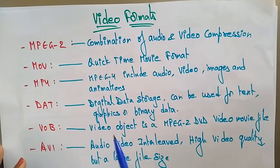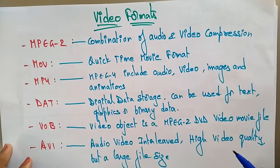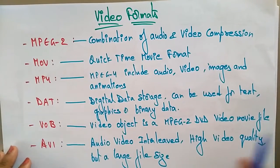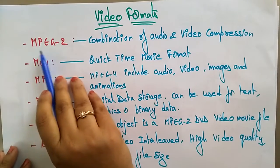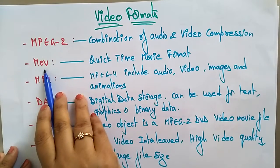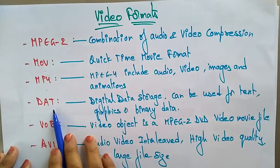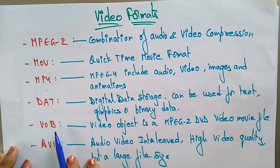Let's see the video formats. What are the different formats? MPEG2, MOV, MP4, DAT, VOB, AVI. I hope you are already seeing these video formats — whenever you download any file you will get an extension like .avi, .mpeg, .mp4, .mov, .vob, and so on.